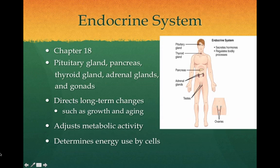The endocrine system includes major organs such as the pituitary gland, the pancreas, the thyroid gland, the adrenal glands, the gonads, and other endocrine tissues. This system directs long-term changes in the body such as growth and aging, and it also adjusts metabolic activity and determines energy use in the body. We will study the endocrine system in Chapter 18.